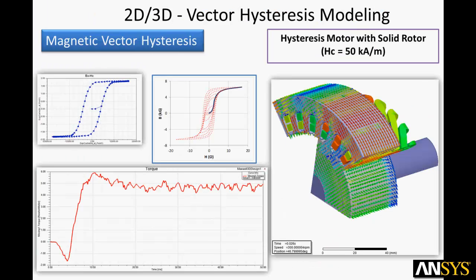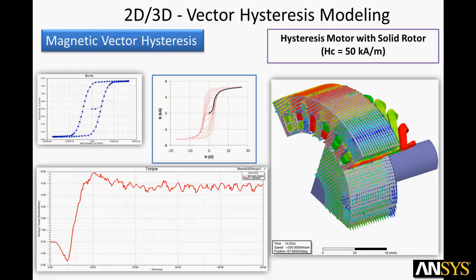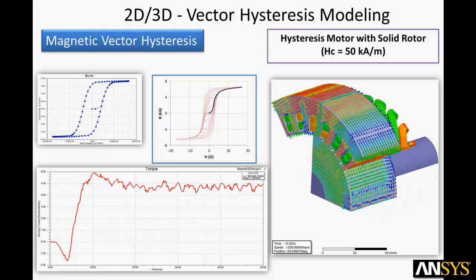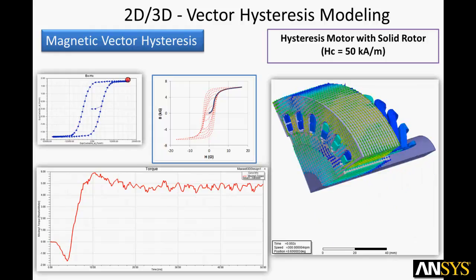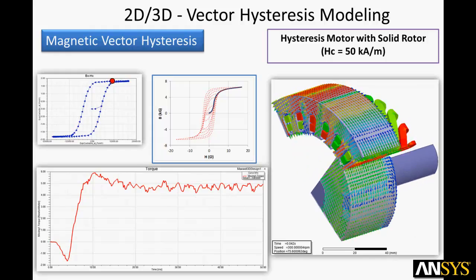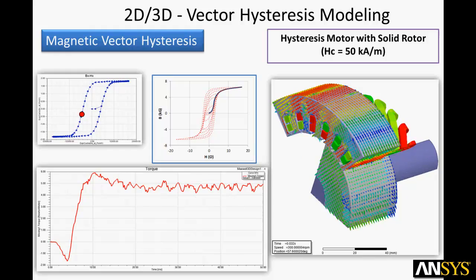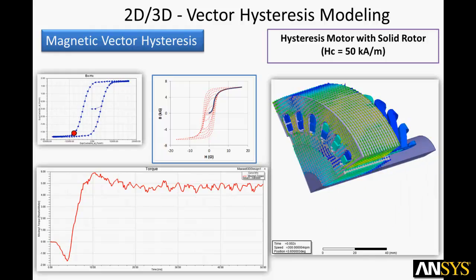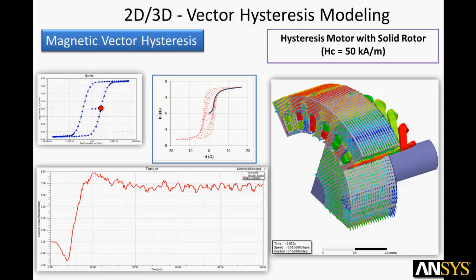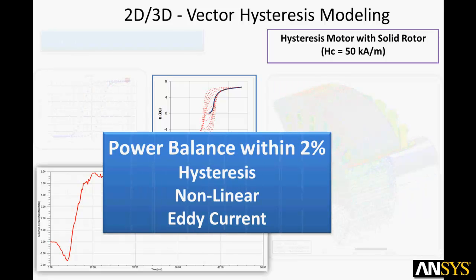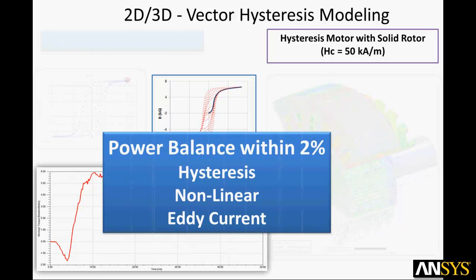Here you see an example that requires the most advanced magnetics modeling. This hysteresis motor has a solid rotor with a thin layer of ferromagnetic material that provides dynamic magnetic pole creation. This can be modeled only if the ferromagnetic material demonstrates hysteresis. Accurate prediction of motor efficiency also requires nonlinear modeling and eddy effects. A measure of accuracy is the power balance between electrical input power and the mechanical output power including various losses.